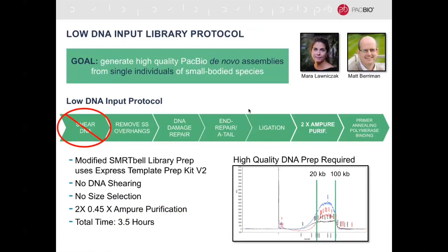Those are great methods once you're in the analysis phase, but to address the challenge of DNA input requirements for PacBio, we launched this collaboration with Mara and Matt Berryman at Sanger. The goal was to generate high-quality PacBio de novo assemblies from single individuals of small-bodied and often highly heterozygous organisms. The protocol is similar to our standard library prep, except it does not include a DNA shearing step and does not include a size selection step — both measures to reduce the loss of material during the protocol.